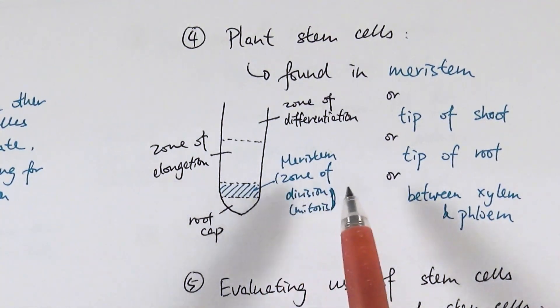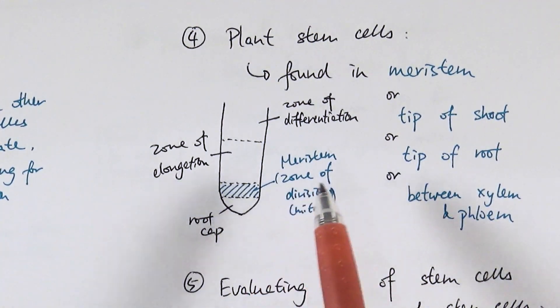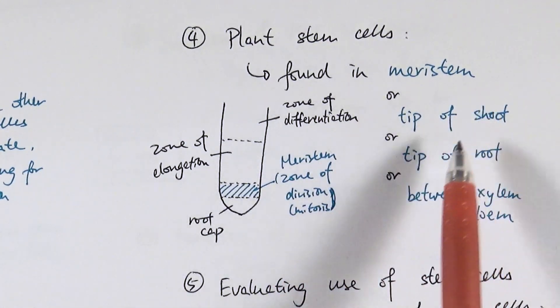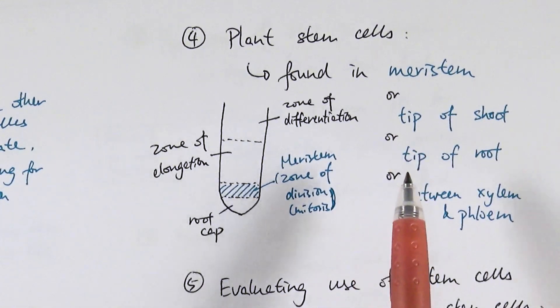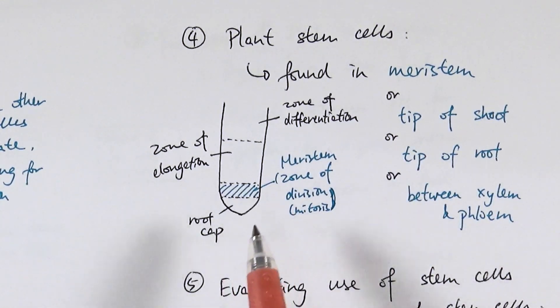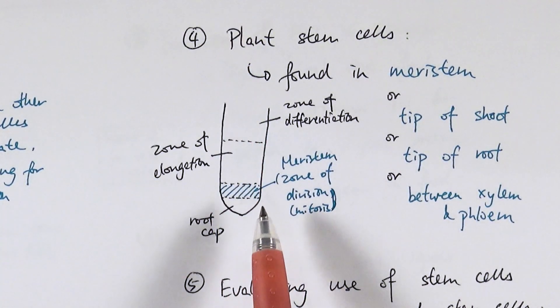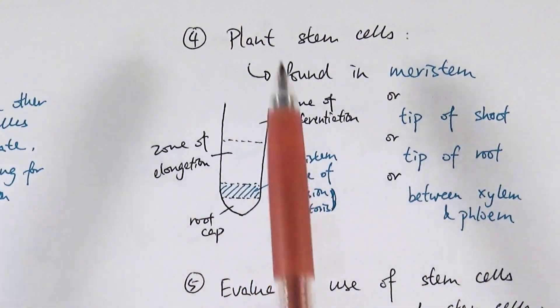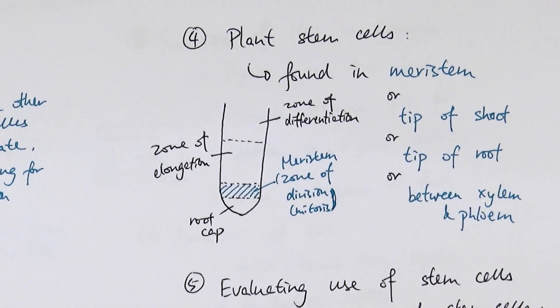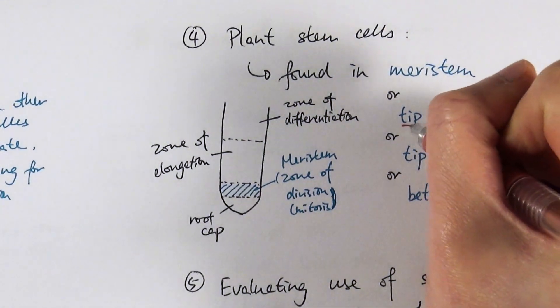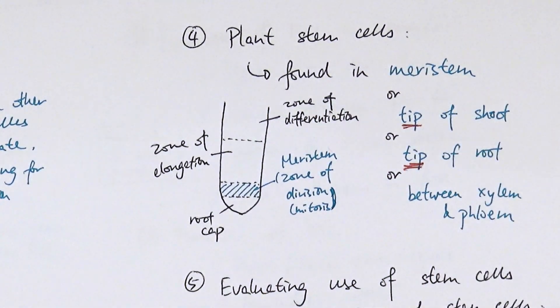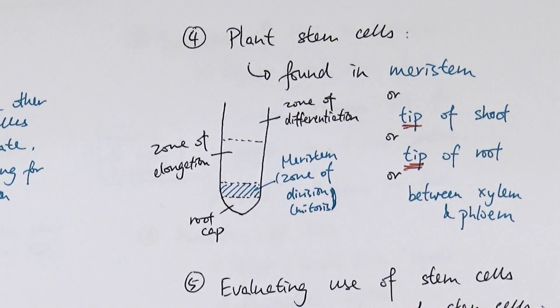Or we could say that this is the zone of meristemic tissues or the zone of division by mitosis. Or you can say the tip of a root, not throughout the entire thing. So it's important you have to say it's found in the tip of the shoot or the tip of the root. If you just say found in shoot or found in the root, you will not get the mark. Make sure you include the word tip.